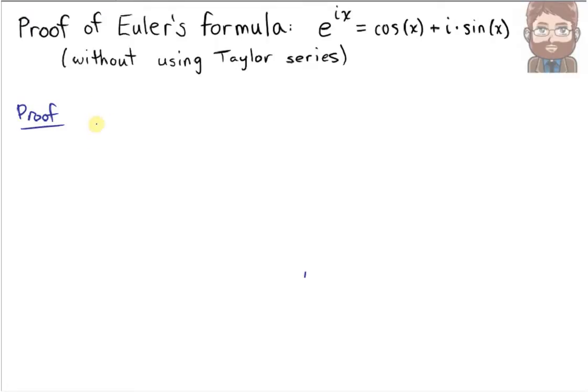The key step in this proof is to define a function relating these two quantities. f(x) equals cosine x plus i times sine x times e to the negative ix.